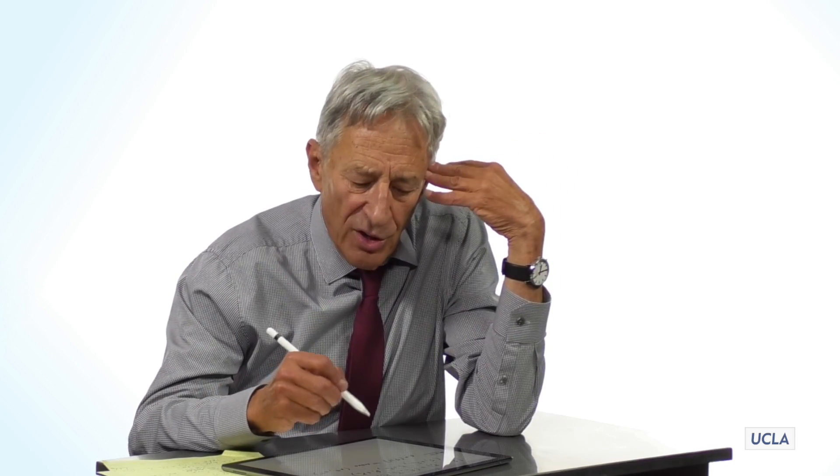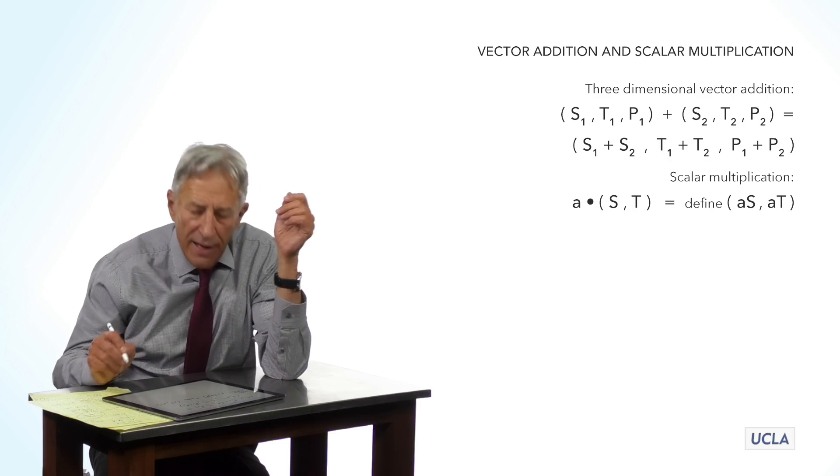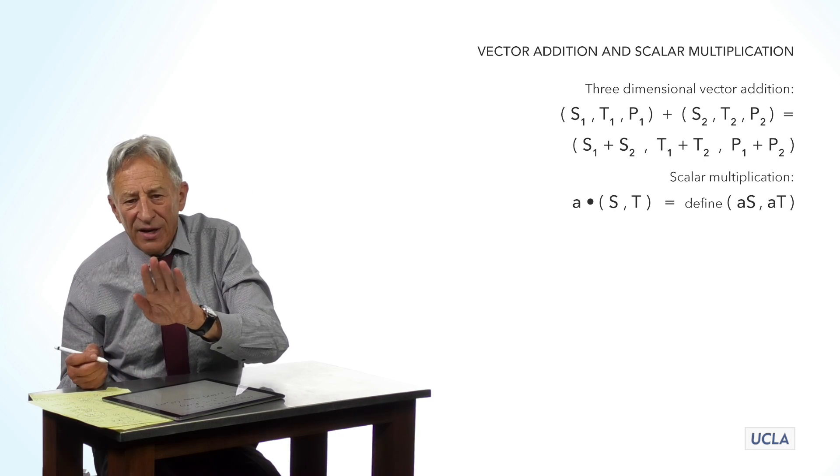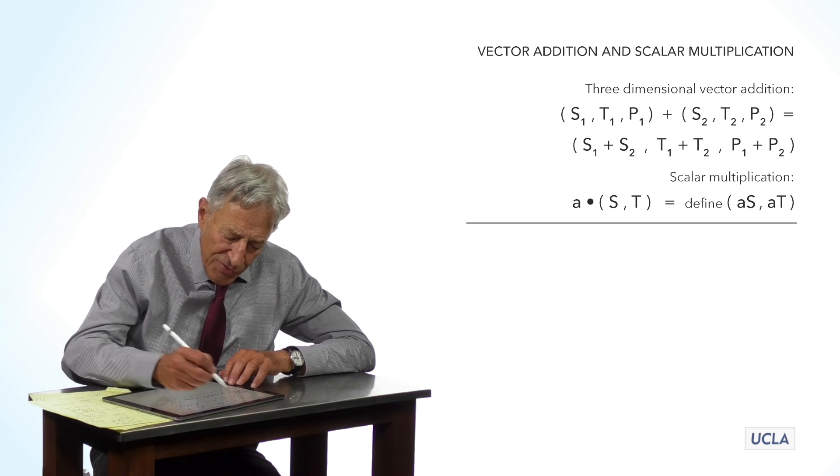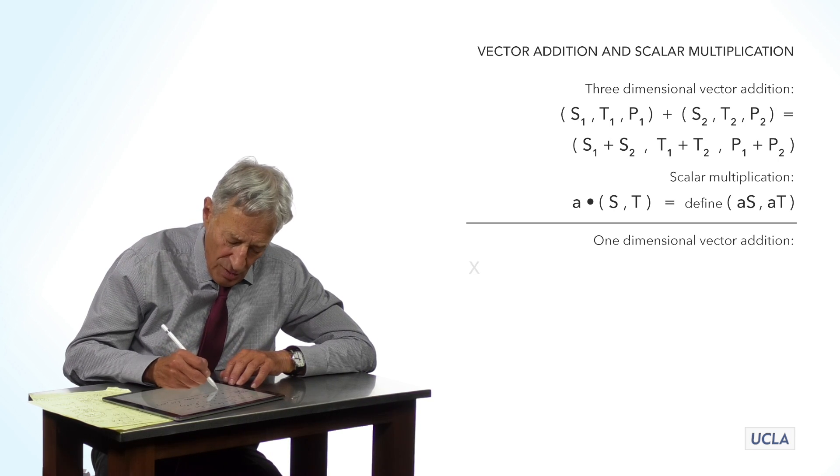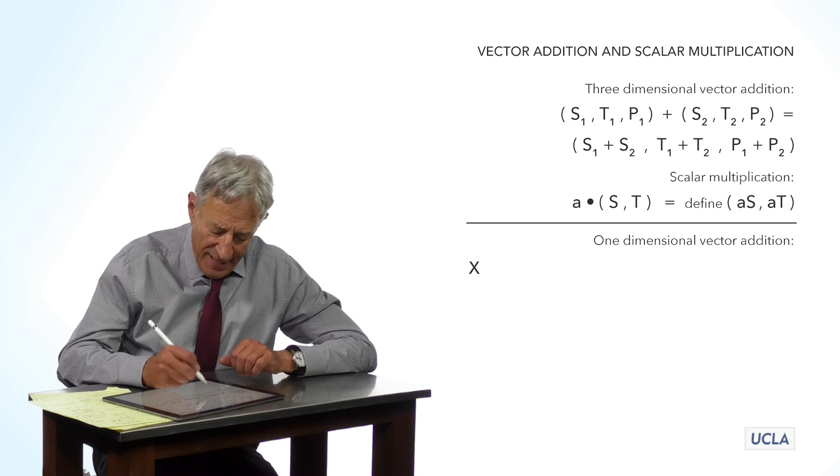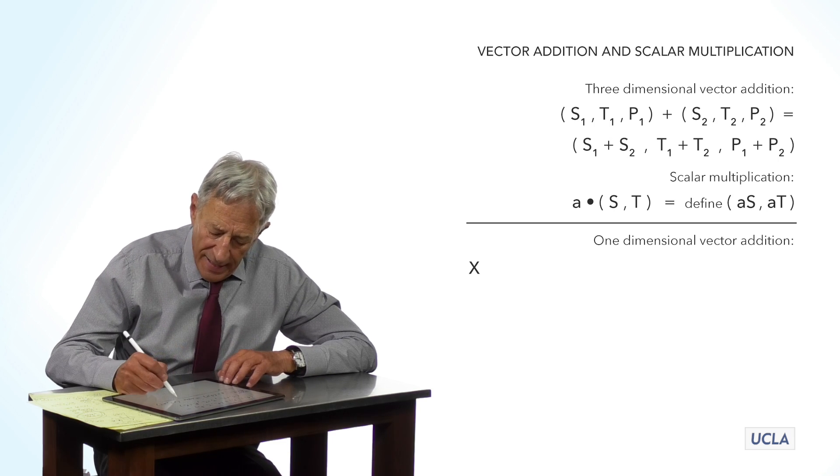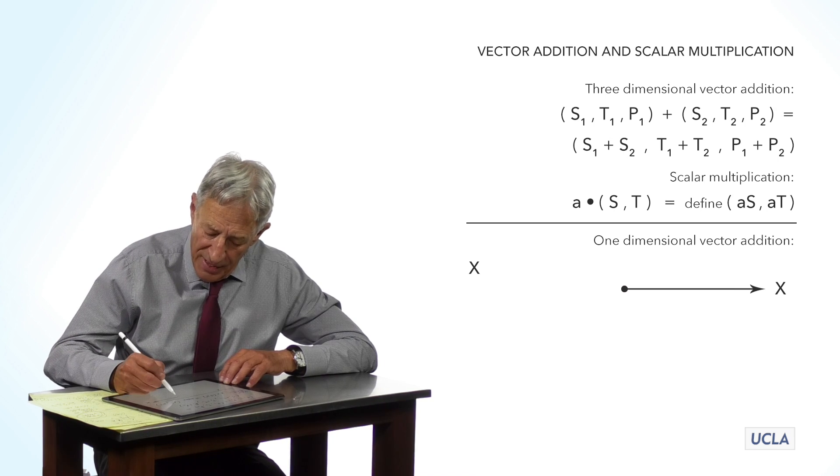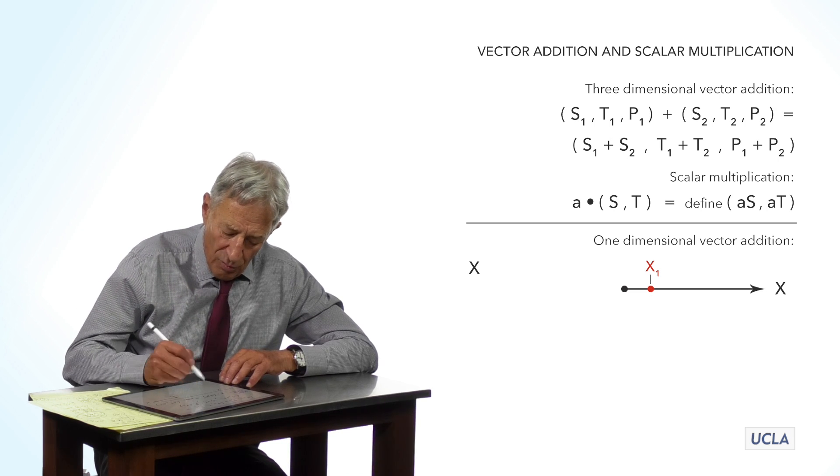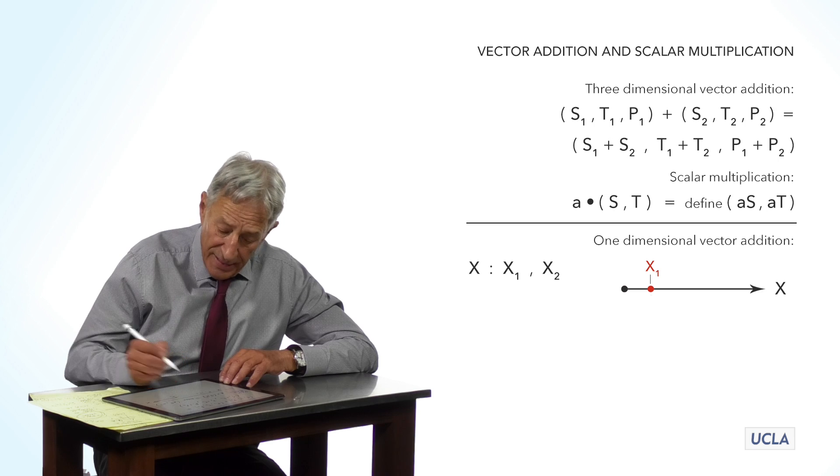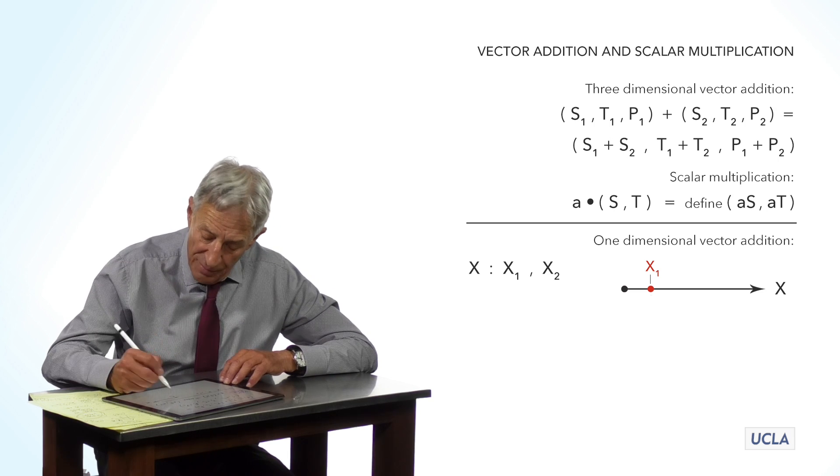Now, what I want to do is I want to go back to these two operations, vector addition and scalar multiplication, and I want to show you what they look like geometrically. So, first of all, let's work in 1D, where we have a state variable x, and the state space is x space, and here is a point x1. So, we're going to have two values here, x1 and x2. Here is the point x2.